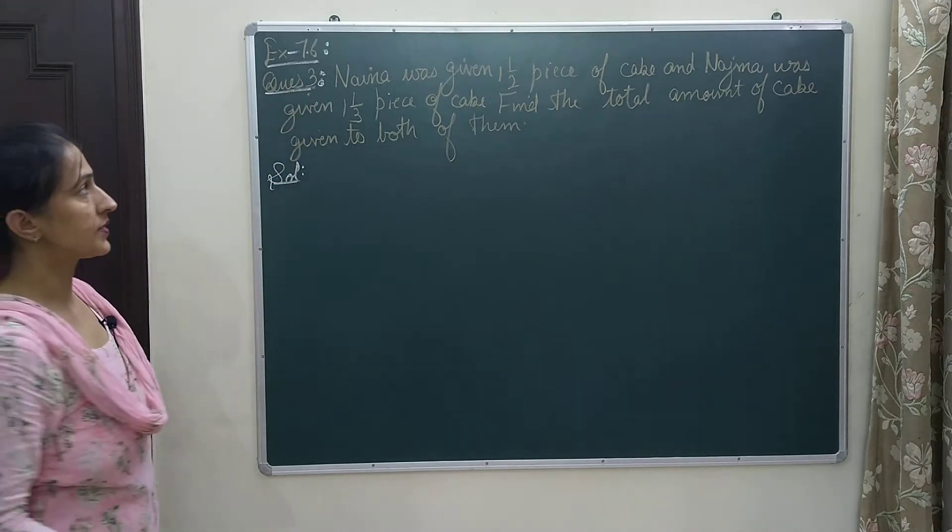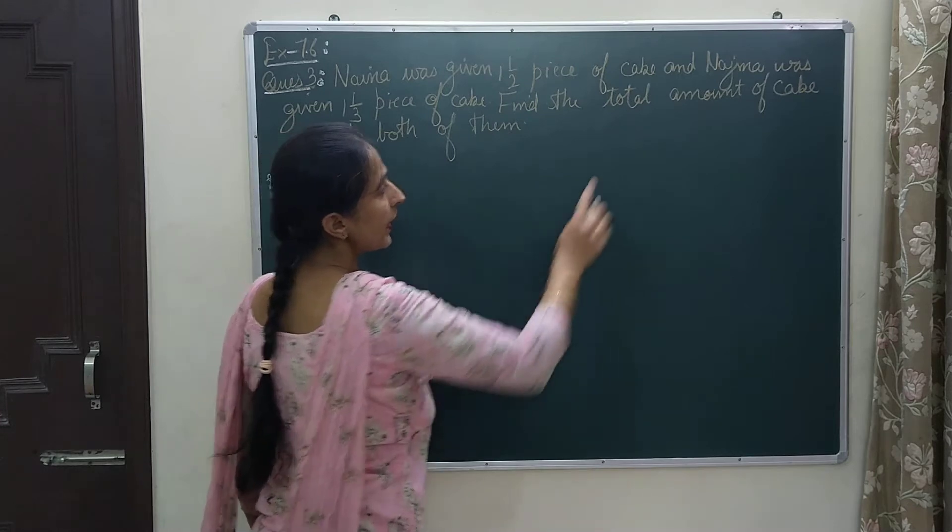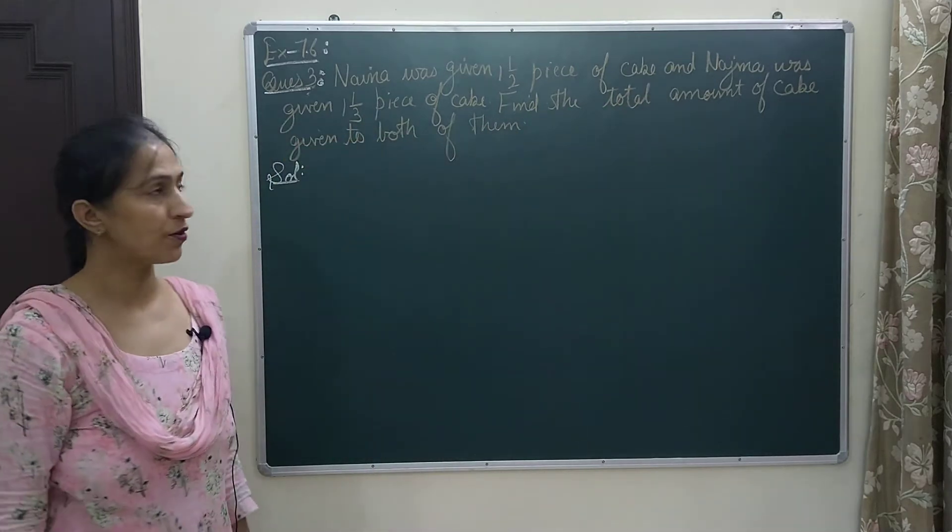Number three of XA 7.6. Naina was given 1 and 1/2 piece of cake and Najma was given 1 and 1/3 piece of cake.